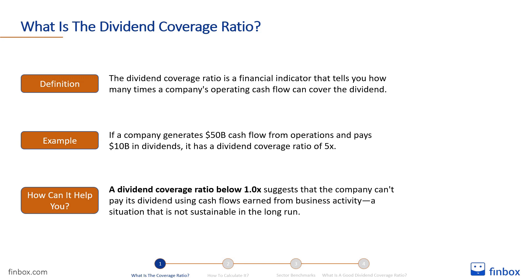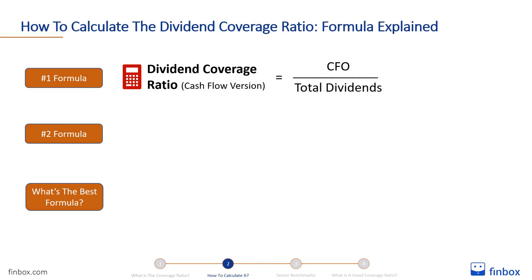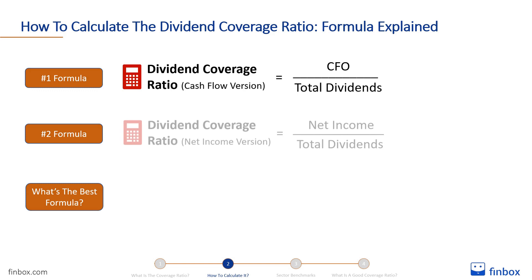The dividend coverage ratio is equal to cash flow from operations divided by total dividends paid. Some investors prefer to calculate it as the reciprocal of the dividend payout ratio, dividing net income by total dividends paid.